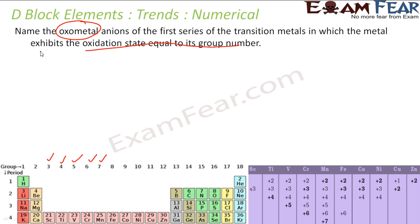But the question specifically asks for oxo metal anions — that is, metal ions combined with oxygen forming an anion. For manganese, the oxo metal anion we know is MnO4⁻. This is the metal with oxygen forming an anion. So manganese qualifies.